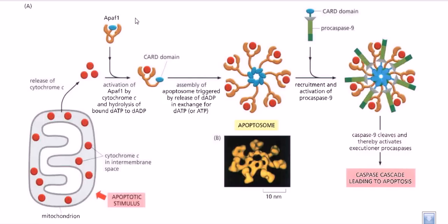Whenever cytochrome c leaks out into the cytoplasm from the mitochondrial intermembrane space, the cytochrome c along with Apaf-1 hydrolyzes ATP into ADP, utilizing the energy of hydrolysis. The cytochrome c sits on the active site of Apaf-1 and activates it. These Apaf-1 molecules along with cytochrome c align together and interact with each other through CARD domains, continuing to hydrolyze ATP to orient themselves. They use this energy to finally form what is called an apoptosome.